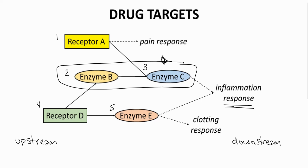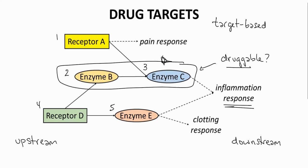Therefore, Enzyme C would be more downstream than Enzyme B and would be the top pick. The molecular biology team would study Enzyme C to determine whether it is druggable, meaning it's able to be affected by the action of a drug. Selecting a target is a key step in a target-based drug discovery program, which is the most common type of program for discovering orally delivered drugs.